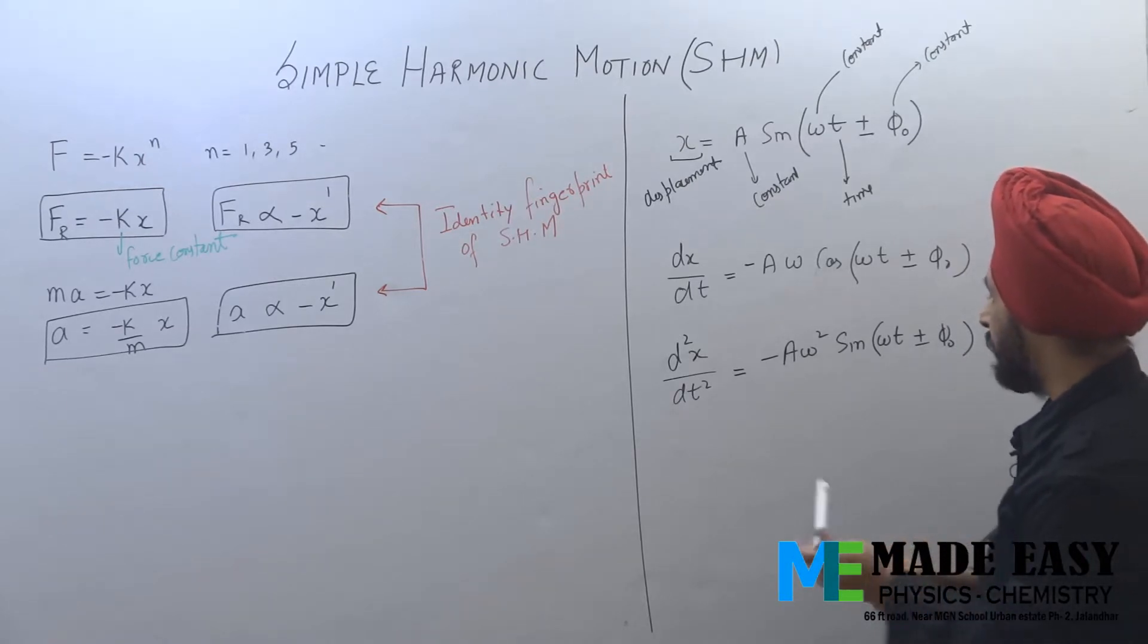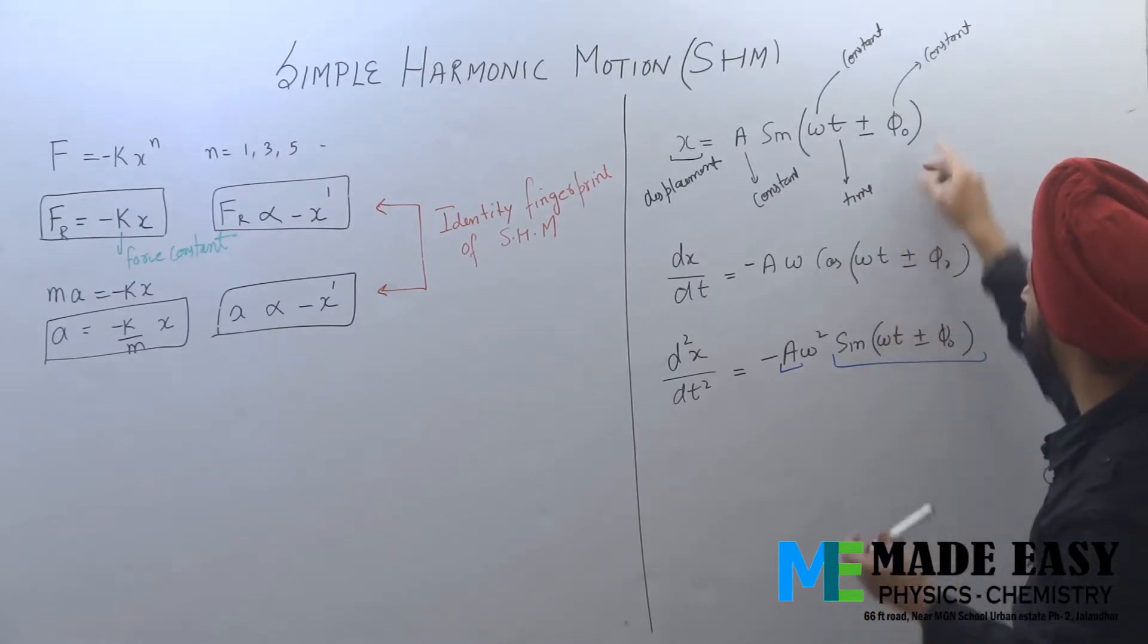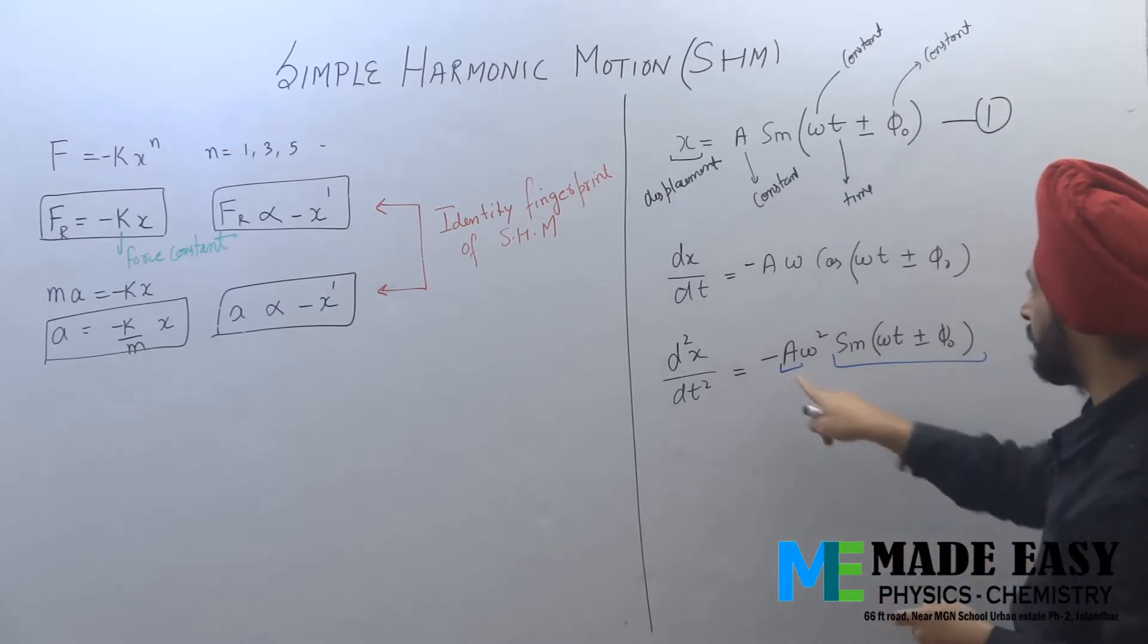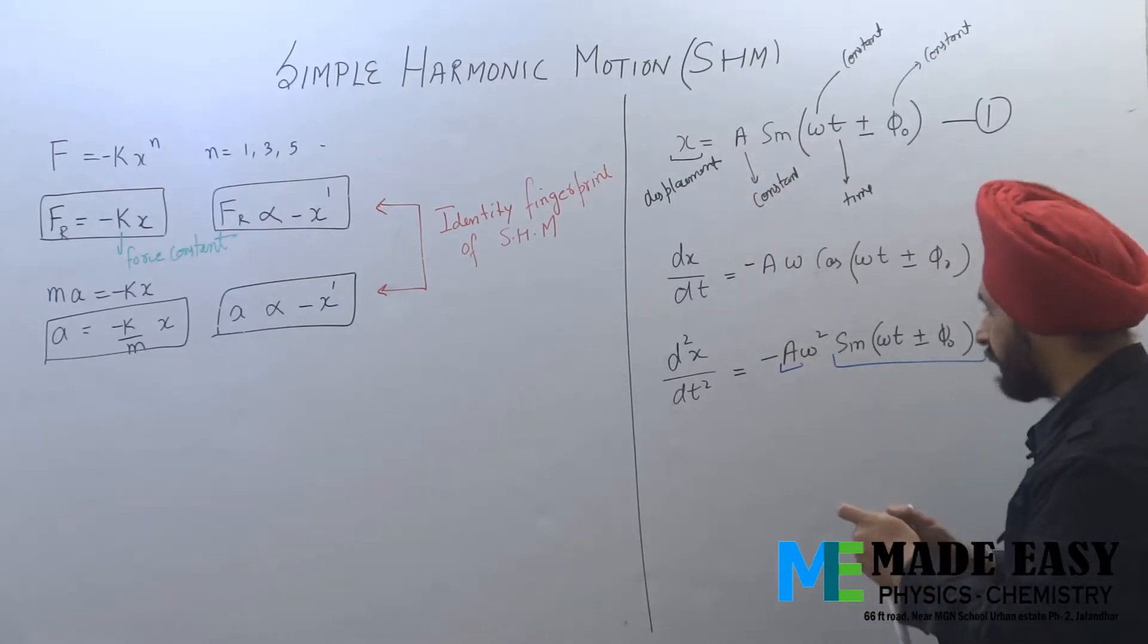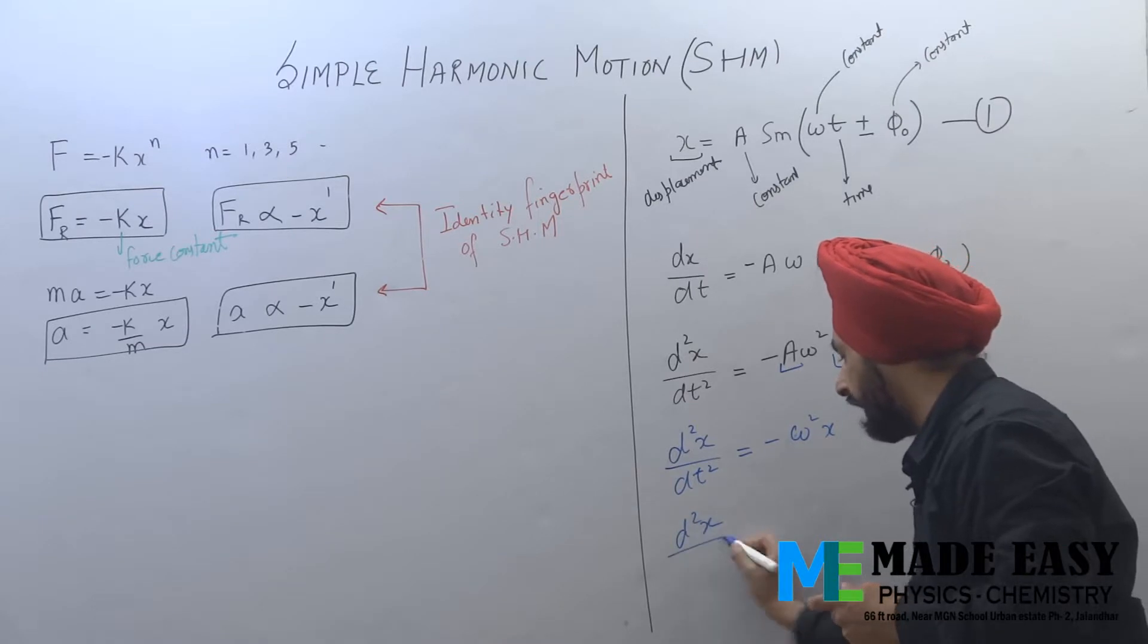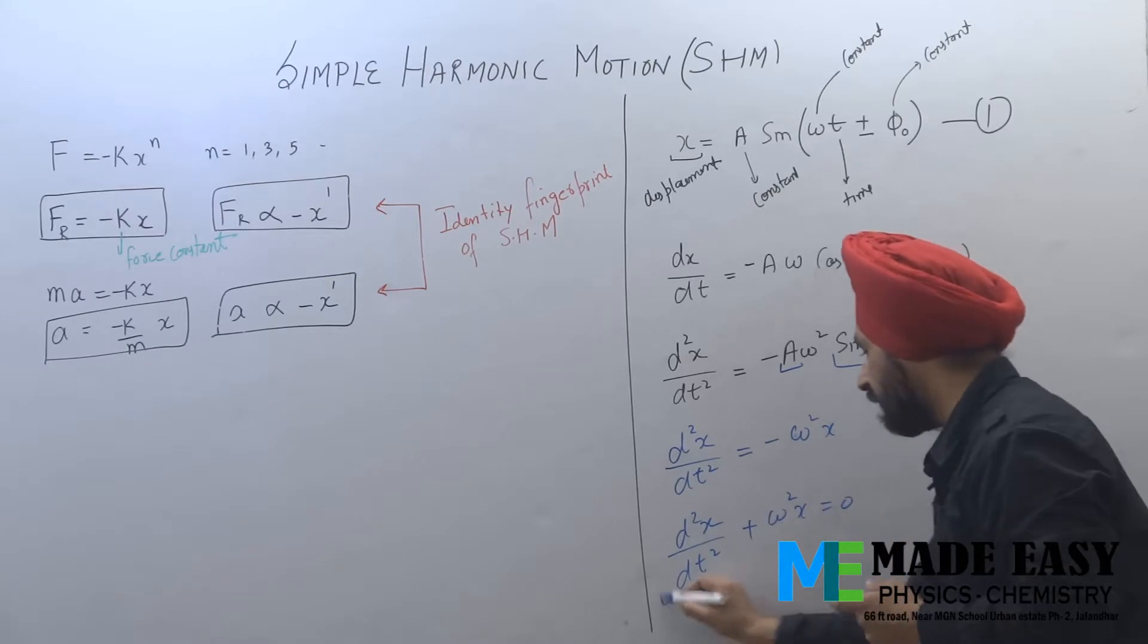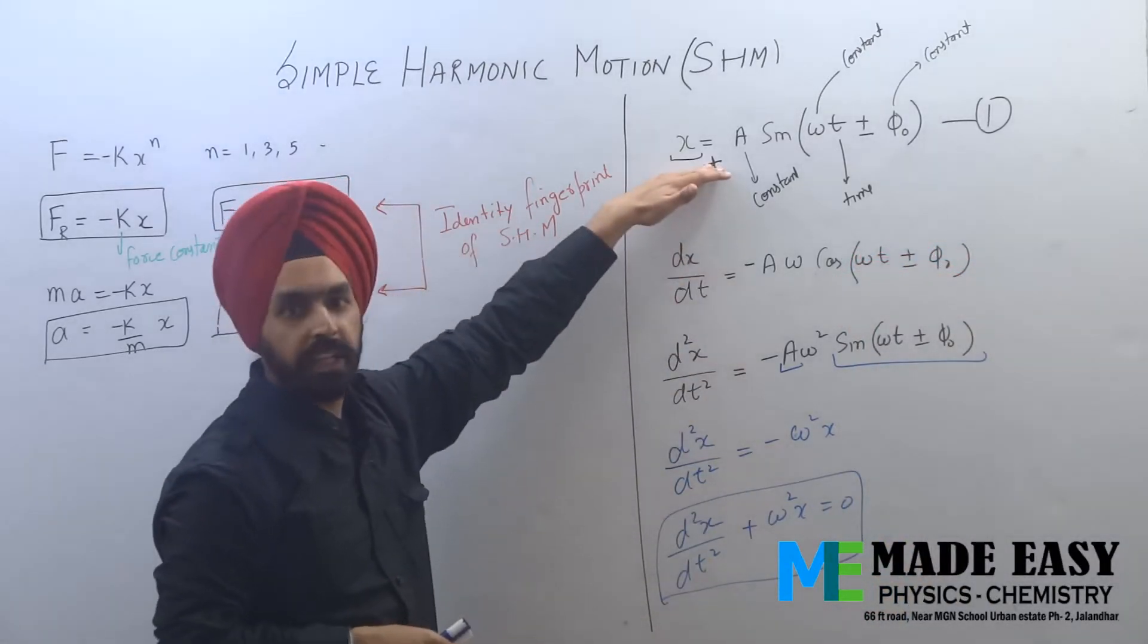Now see, this A into sin omega t - this thing is nothing but x. Let this be equation number one. So if you look at A sin omega t plus or minus phi naught, what does it represent? Displacement x. So this equation can be written as: taking this way, d square x by dt square plus omega square x is equal to 0. Clearly, this equation we have derived here.